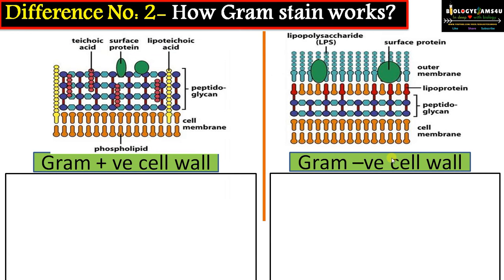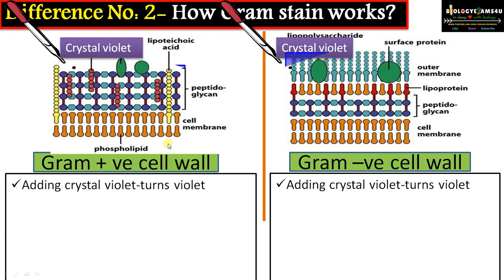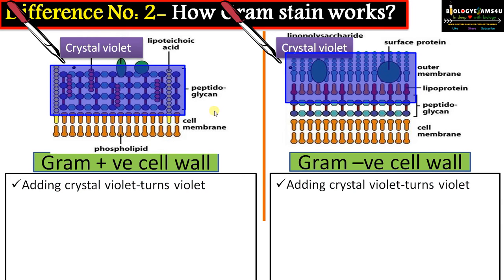Difference number two is regarding how gram stain works — the basic principle of gram staining. Gram staining is primarily due to the difference in the cell wall composition of gram positive and gram negative bacteria. In the first step we add crystal violet, and both gram positive and gram negative bacteria will take up the stain and turn violet.